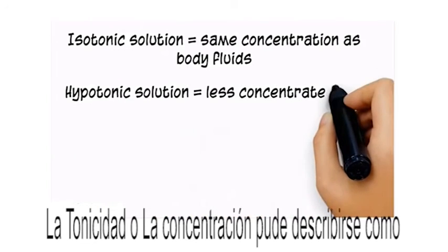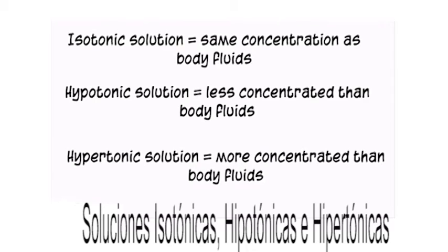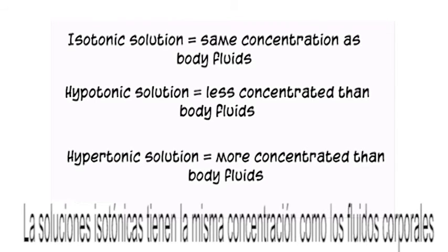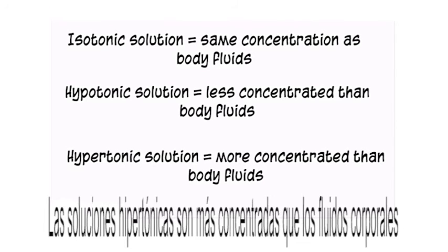Tonicity, or concentration, can be described in terms of isotonic, hypotonic, and hypertonic solutions. Isotonic solutions have the same concentration as body fluids. Hypotonic solutions are less concentrated than body fluids. Hypertonic solutions are more concentrated than body fluids.